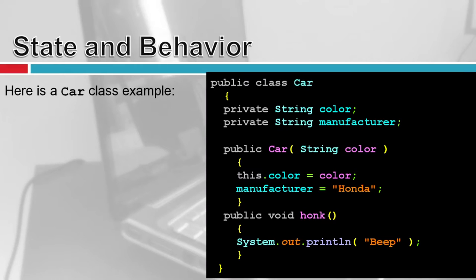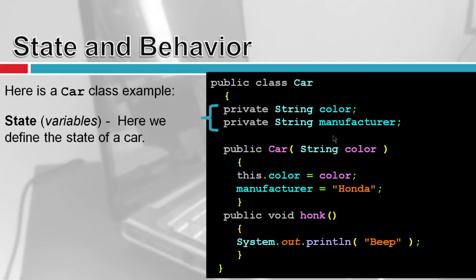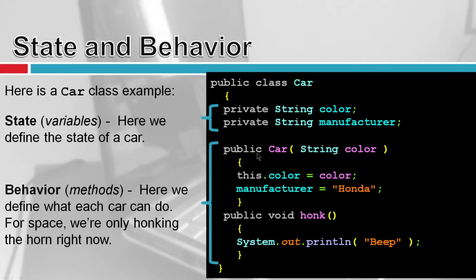Here's a very simple class of a car. At the top we're defining variables — a string called color and a string called manufacturer. They could be integers, objects, or anything. I could even have four wheel class objects here. These variables describe the state of the car. Down here you see the methods. I've got a constructor for the car — you can tell a method by its open and close parentheses and curly braces. This tells what the car can do.